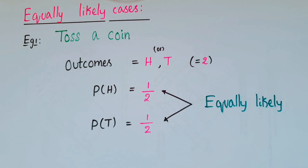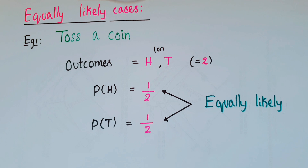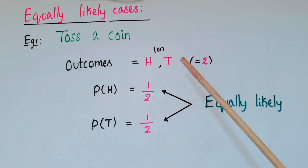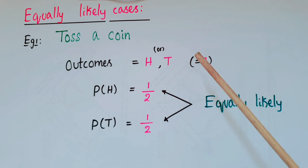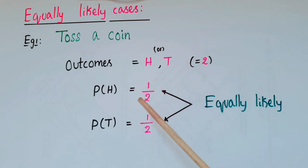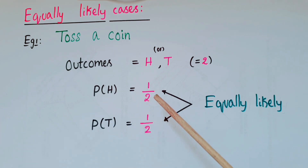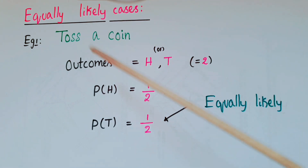Today I am going to talk about equally likely cases in probability. The first example is tossing a coin. The outcomes are head or tail, so total outcomes are two. Probability of getting head is 1/2 and probability of getting tail is 1/2. Since these two probabilities are the same, these are called equally likely outcomes.